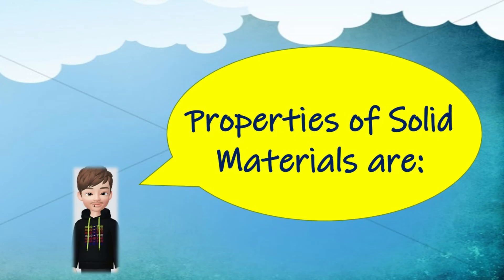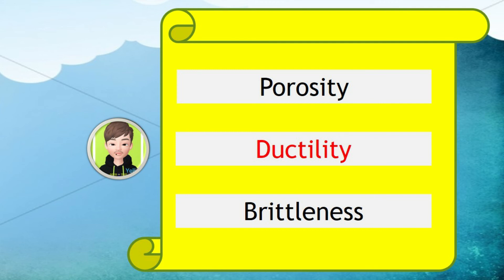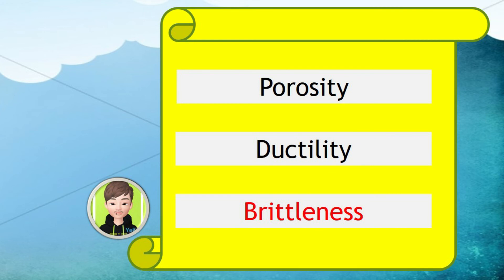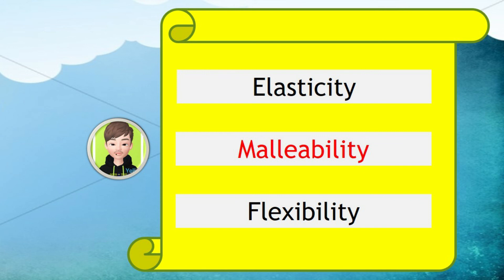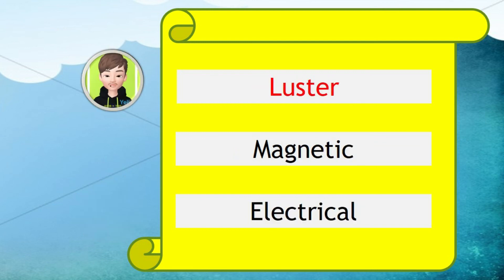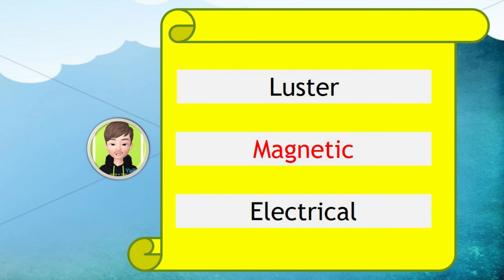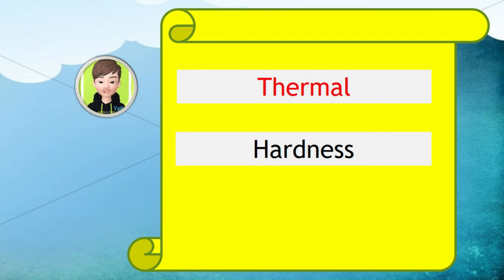Properties of solid materials are: Porosity, Ductility, Brittleness, Elasticity, Malleability, Flexibility, Luster, Magnetic, Electrical, Thermal, and Hardness.